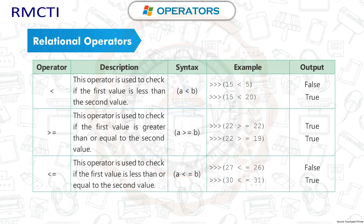The < operator checks if the first value is less than the second. For example, 15 < 5 returns False, and 15 < 20 returns True. The >= operator checks if the first value is greater than or equal to the second. For example, 22 >= 22 returns True, and 22 >= 19 also returns True.